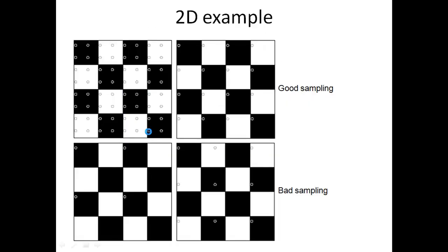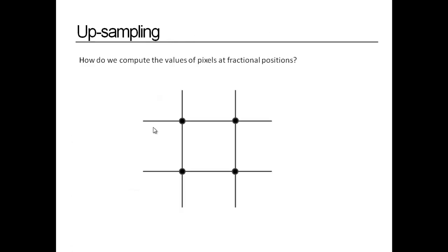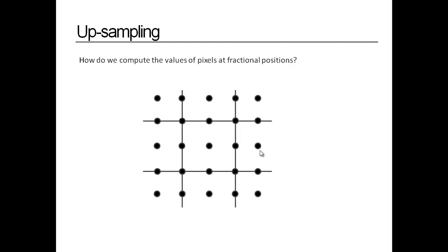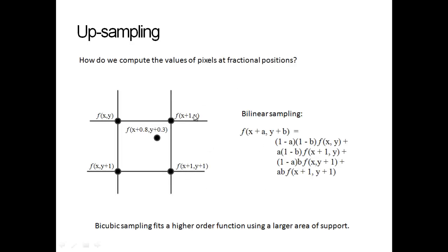To zoom into an image I need upsampling — finding the pixel values at fractional positions, i.e., intermediate pixels. Various algorithms are available for this. The simplest is bilinear sampling, where we find distances from a known intensity value and interpolate to find the effective value of the pixel in question.